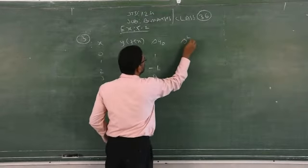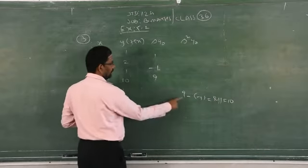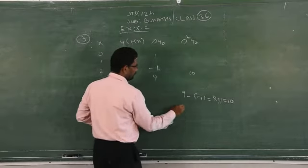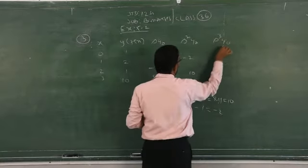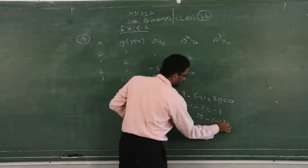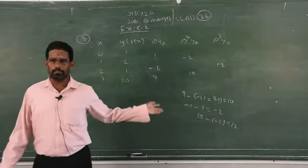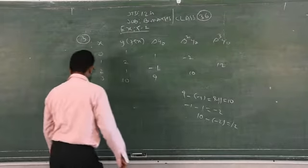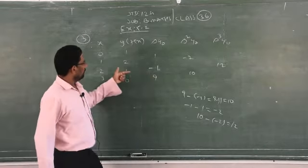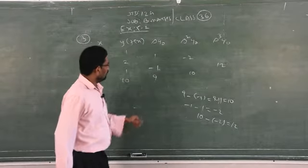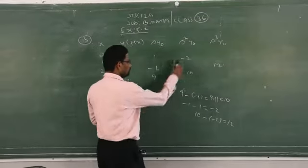Next, compute delta squared y naught: 9 minus (−1) = 9 + 1 = 10; minus 1 minus 1 = minus 2. Then delta cubed y naught: 10 minus (−2) = 12. So you build up the difference table until you get a single number in each column. The values are: delta y: 1, −1, 9; delta² y: 10, −2; delta³ y: 12.